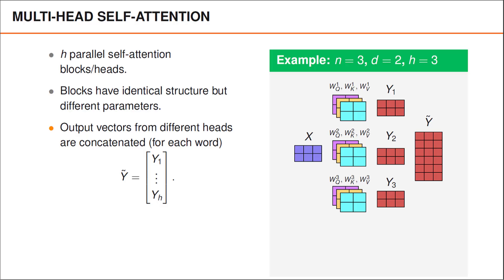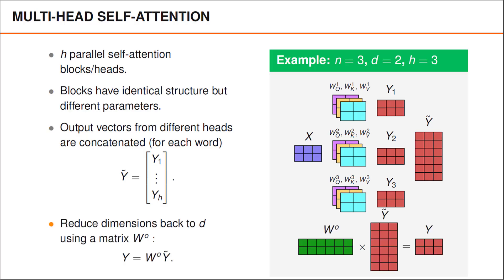One could imagine that the output from our multi-head attention layer could be more high-dimensional than the input. But due to the add and normalize layer that follows afterwards, it is easier if input and output have the same dimension. To shorten the word embeddings back to length d, we multiply y tilde with a matrix W0, which is yet another matrix that contains learnable parameters. In our example, W0 needs to have the dimensions 2 by 6 in order to ensure that the output y has dimensions 2 by 3.